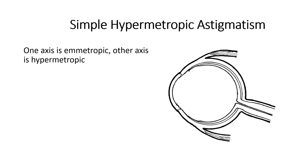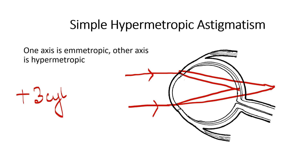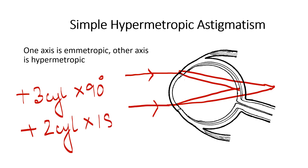Simple hypermetropic astigmatism means that one axis is emetropic and the other is hypermetropic — parallel rays of light in one meridian meet on the retina, whereas in the other meridian they meet behind the retina. The prescription is a plus or convex cylinder correcting the hypermetropic axis, such as plus three cylinder at 90 degrees or plus two cylinder at 180 degrees. A convex cylindrical lens at a particular axis is the prescription for simple hypermetropic astigmatism.